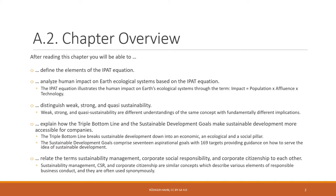Furthermore, you will be able to explain how the so-called triple bottom line and the sustainable development goals of the United Nations make sustainable development more accessible for companies. The triple bottom line breaks sustainable development down into three pillars: an economic pillar, an ecological pillar, and a social pillar.